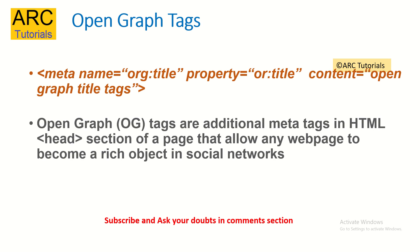Then come the open graph tags. These look very similar to meta tags because they are inside the meta tags, but they have an attribute which specifies open graph title tags. Open graph tags are additional meta tags in the HTML head section of a page that allow any web page to become a rich object in social networks. When you provide meta tags like organization title, property, and content type, they give more detail about how your page gets shared and indexed on social networks. Make sure you provide the proper open graph tags in your header section.